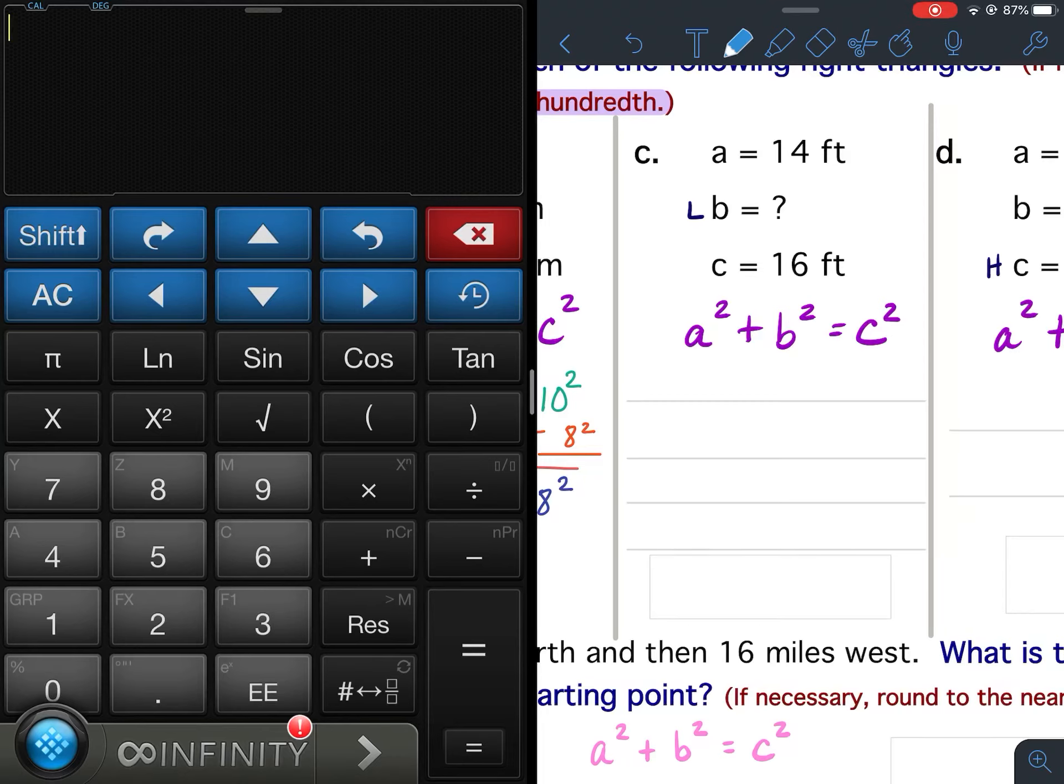Pythagorean Theorem, Lesson 24, Example 1, C and D. For C, we know that a is 14 feet, b is the unknown, and c is 16 feet, so we know a leg and the hypotenuse, and we're going to solve for b, which is a leg.